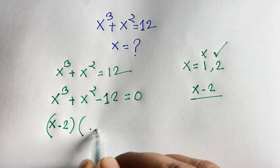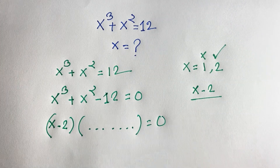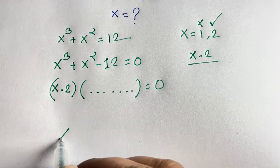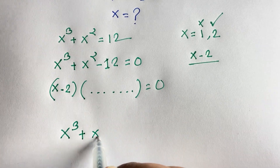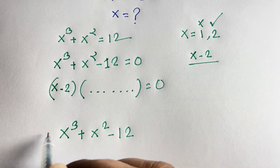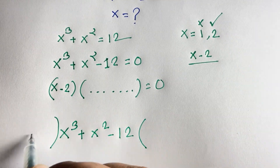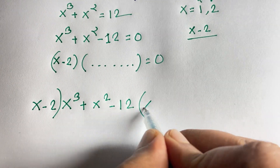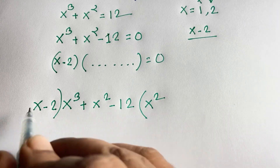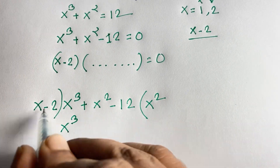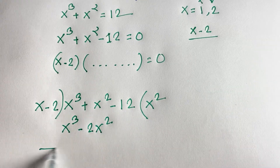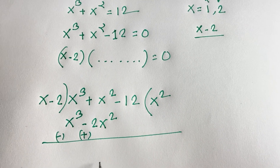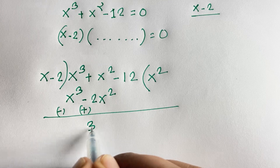If I divide x to the power 3 plus x squared minus 12 by x minus 2, I take x squared first. x squared times x gives x to the power 3, and x squared times 2 gives 2x squared. If I subtract, the signs change, these cancel out, and we find 3x squared. That is 2x squared plus x squared equals 3x squared.